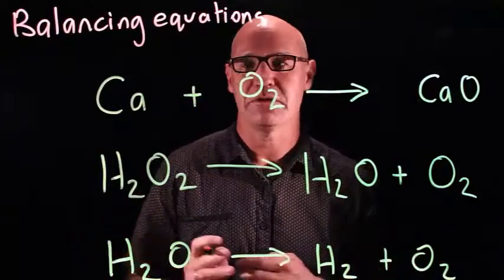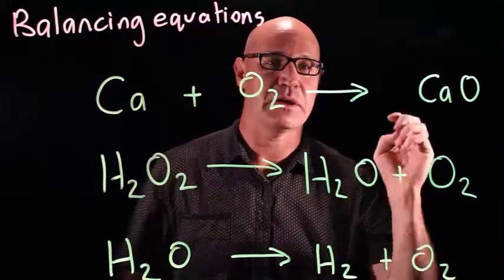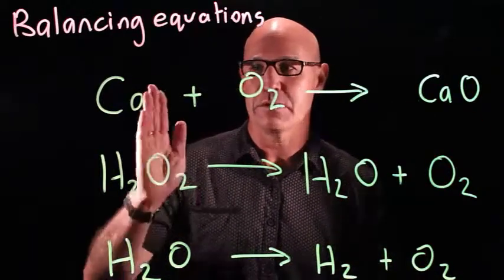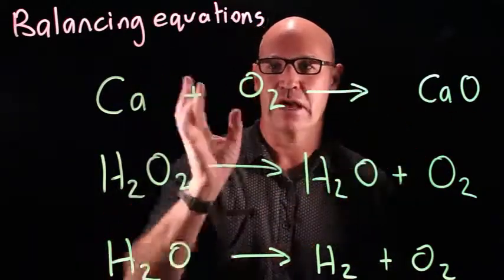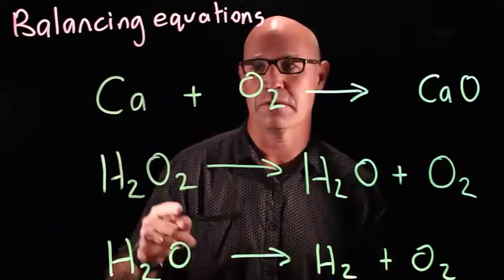So when we're balancing equations, we need to make sure we've got the same number of atoms on our reactant side as we have on our product side. So we need to go through systematically and count this side and that side, and then work out what we can do to balance them.